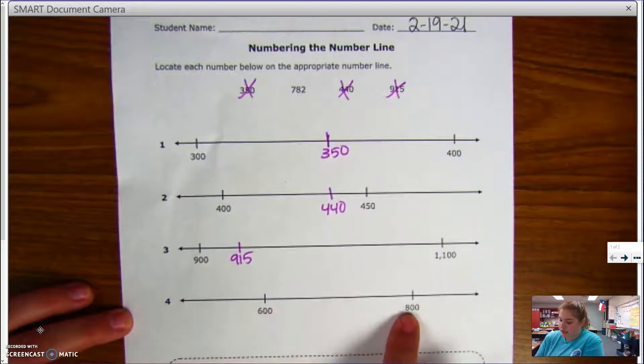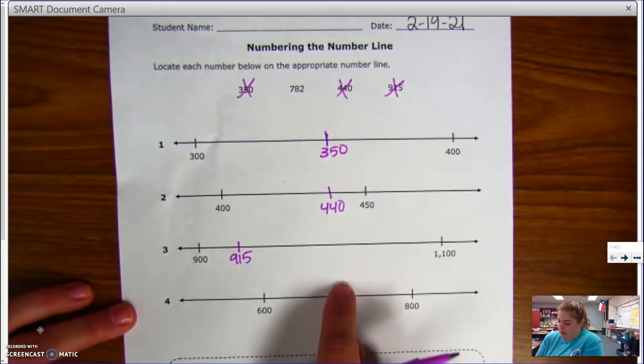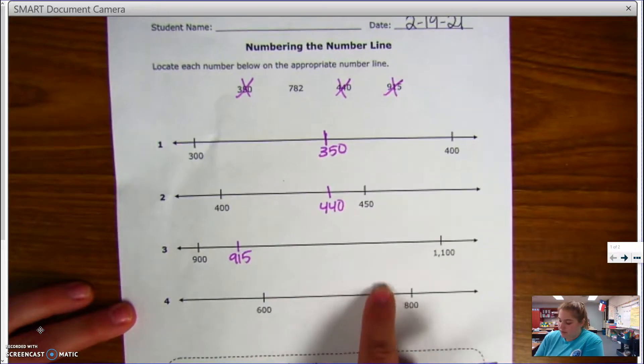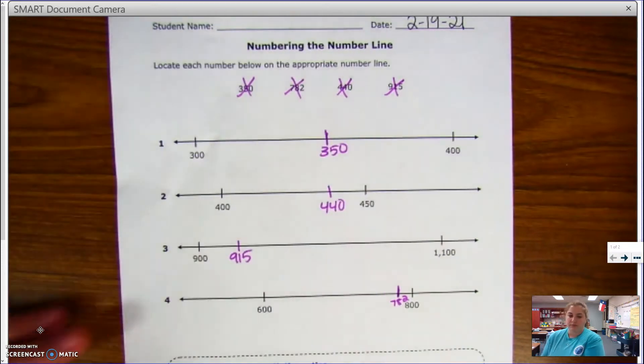And I know 700 is right in the middle between that. The middle would be 750, so 782 is gonna go closer to 800. All right boys and girls, I'll see you next time.